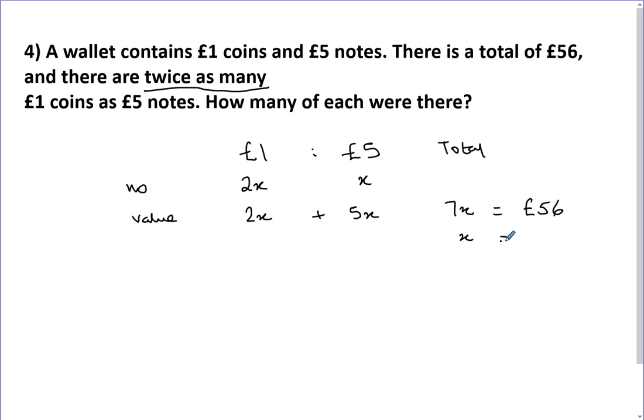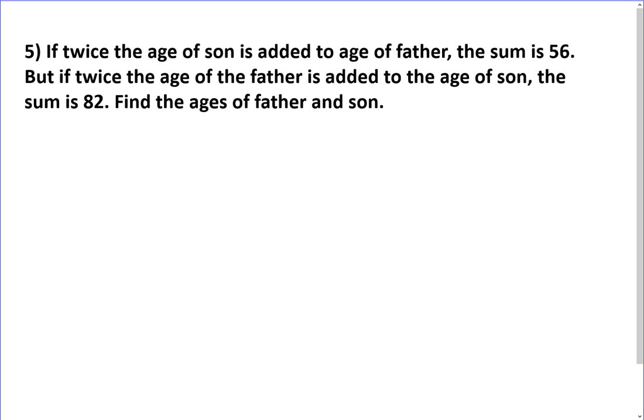So x would be 56 divided by 7, which is 8. And that seemed to be the easiest way of solving this problem. And you can tell 2x would be 16 and 5x would be 40, and the 16 plus 40 gives you the 56 pounds. So this is just a sort of a shortcut rather than trying to do it simultaneously. So you can tell that when you start doing these questions, some of them you know you've got to do it simultaneously. Some you just find a shorter method of doing it.